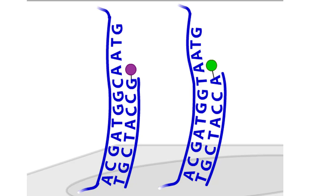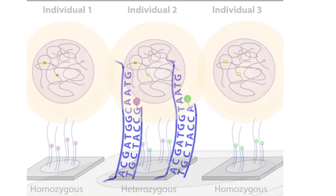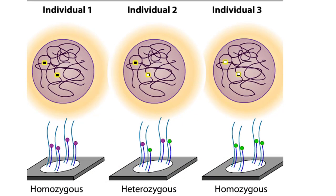In this heterozygous sample, a G has been incorporated into one strand, while an A has been incorporated into the other. Whereas the heterozygous sample contains two colors, the two homozygous samples each contain just one color. Using this technique, researchers can tell what SNPs a person has, and whether the person is homozygous or heterozygous.